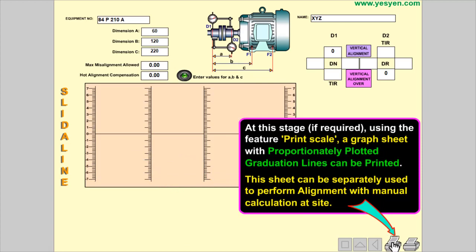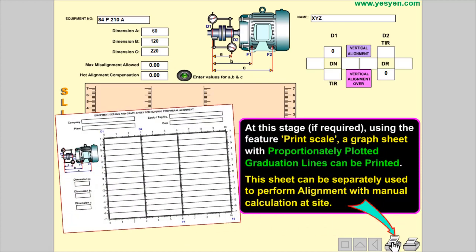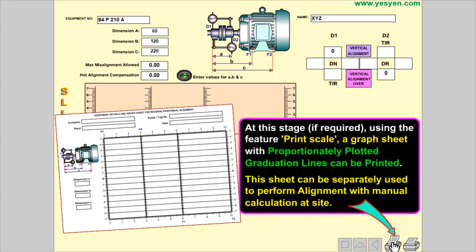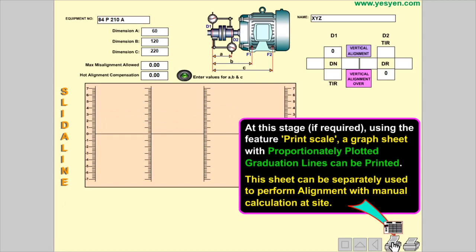At this stage, if required, using the feature Print scale, a graph sheet with proportionately plotted graduation lines can be printed. This sheet can be separately used to perform alignment with manual calculation at site.